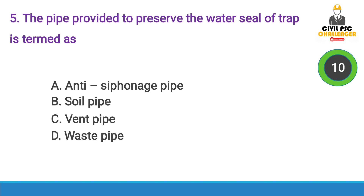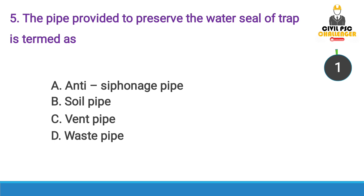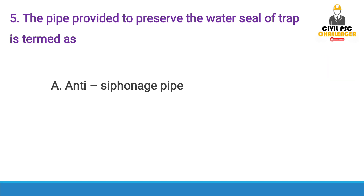Next question: The pipe provided to preserve the water seal of a trap is termed as — Answer option A, Anti-Siphonage Pipe.